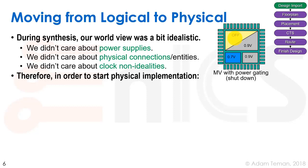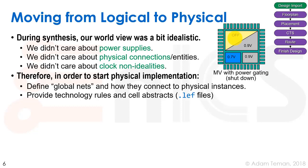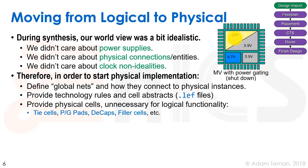Therefore, to start physical implementation, we have to define our global nets — what VDD is, how it actually connects to each one of the cells, and so forth. We have to provide technology rules and cell abstracts: the DRC rules and LEF files that include the size of our cells and where the actual pins are. We also have to provide physical cells, things that were unnecessary during logic synthesis, such as filler cells that fill empty areas of the floor plan, or tie cells that tie gates to one or zero constants.